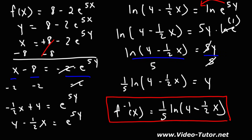That's how you find the inverse function of an exponential function. Remember: the inverse of an exponential function is a logarithmic function. When the exponential function has base e, the inverse gives you the natural log function. When the base is anything other than e, the inverse will be a regular log function. Make sure you understand that.